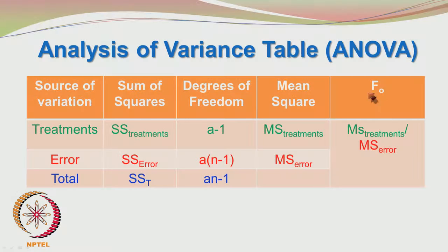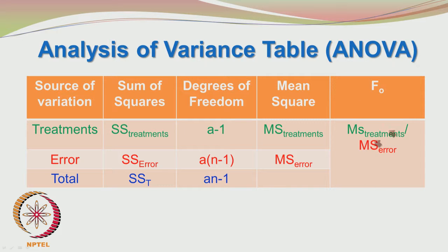If alpha is the chosen level of significance — usually 0.05, but you may choose 0.01, 0.02, 0.1, etc. — and if F0 exceeds F(alpha, A-1, A×(N-1)), then you reject the null hypothesis. The F value lies in the rejection region if this F0 value is greater than F(alpha, A-1, A×(N-1)).